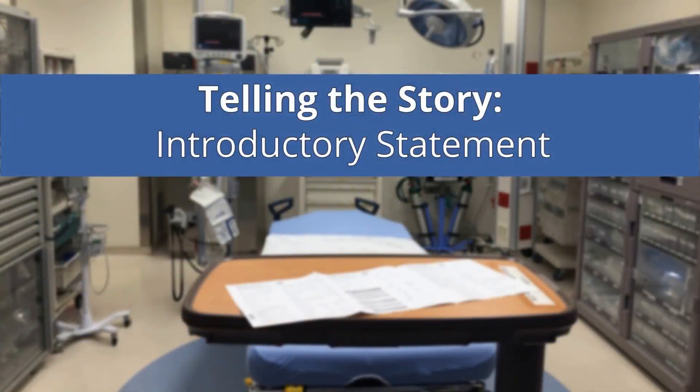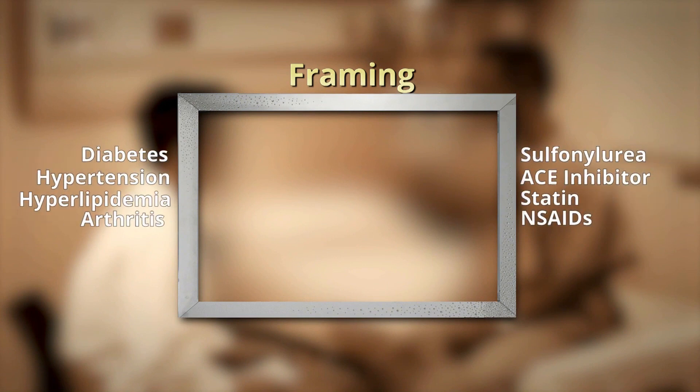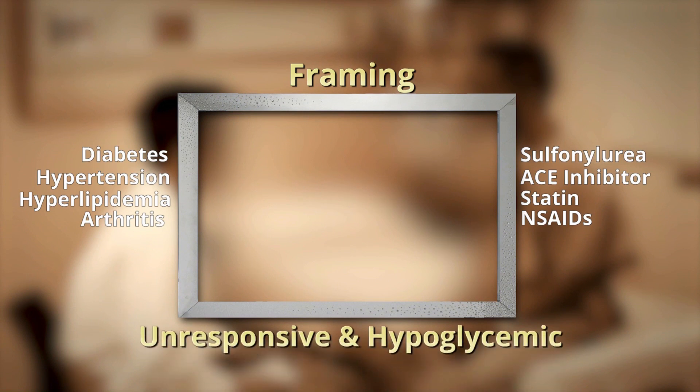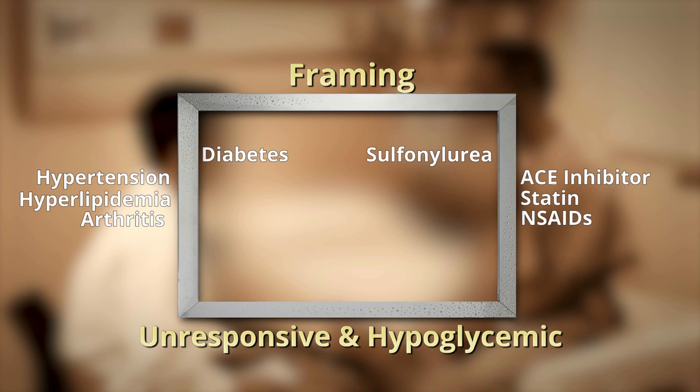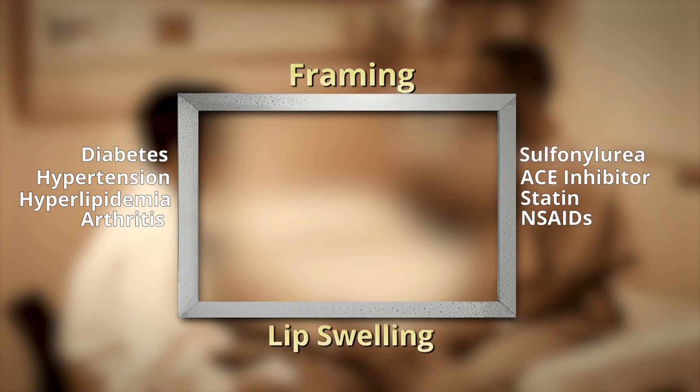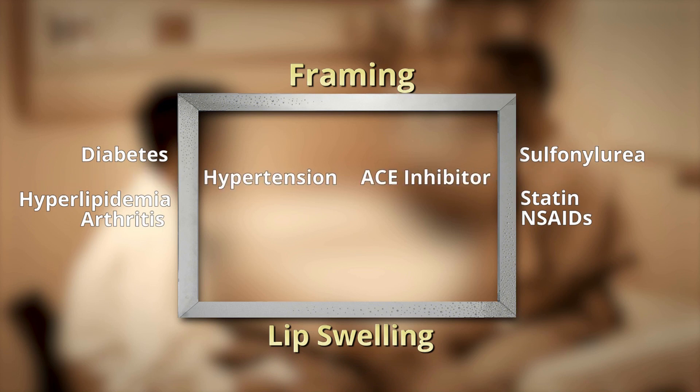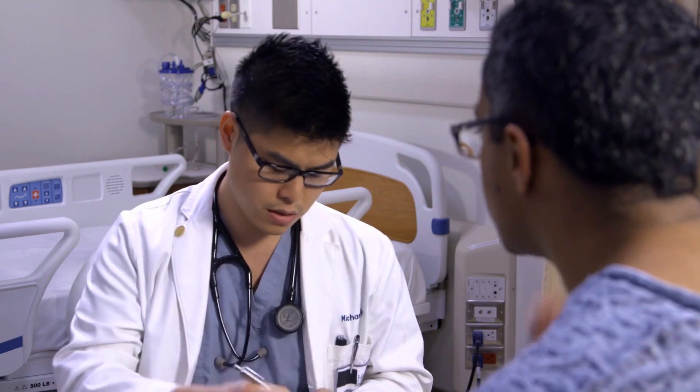Your introductory statement sets the stage by making the reason for the visit clear and creating a frame for the conditions your patient may be at risk for based on their predisposing factors. So let's go back to Mr. Ferguson — a gentleman with diabetes, high blood pressure, high cholesterol, and arthritis. If the reason for his visit is being found unresponsive with a blood glucose of 20, you want to highlight that he's a diabetic patient on an oral hypoglycemic agent. If the reason is severe lip swelling, then you pull in that he has high blood pressure and is on an ACE inhibitor, setting the stage for angioedema. Notice that in either scenario, his high cholesterol and arthritis are not relevant, so they do not necessarily need to be presented. You're using your ending to help shape the beginning of your narrative.